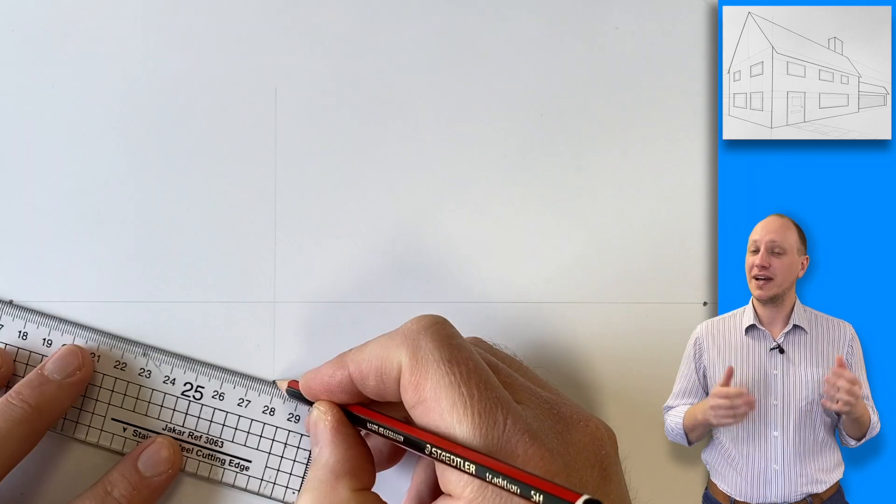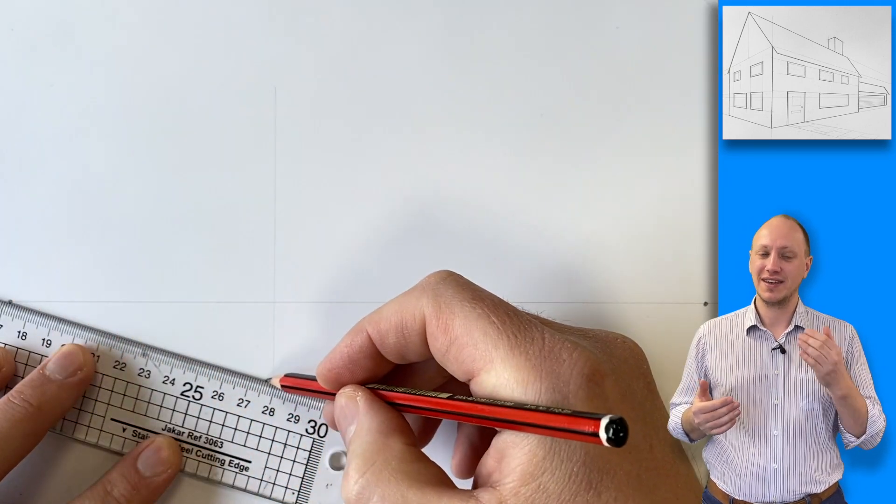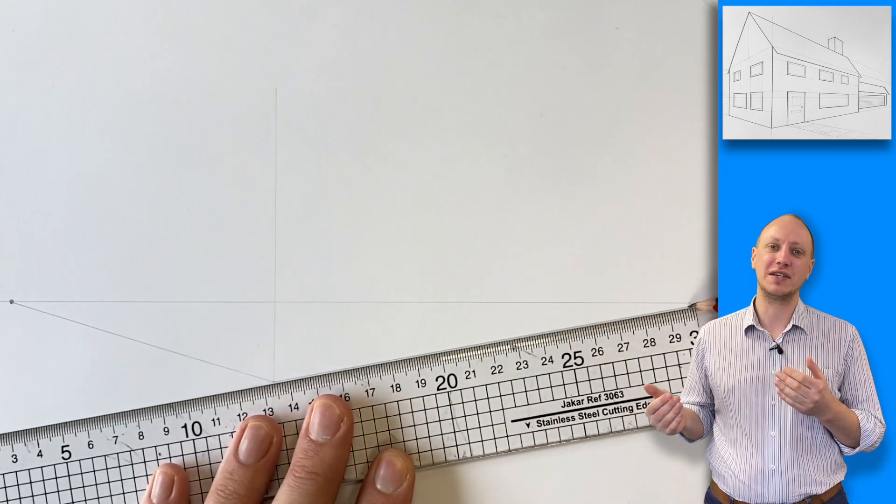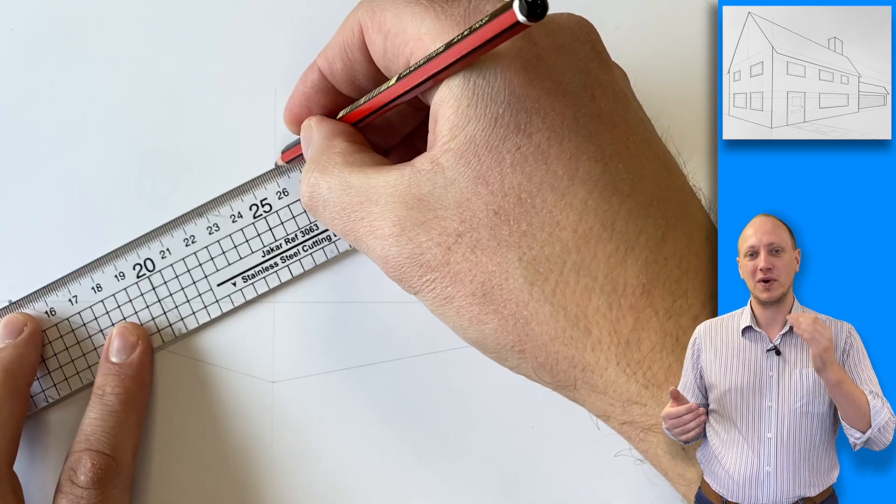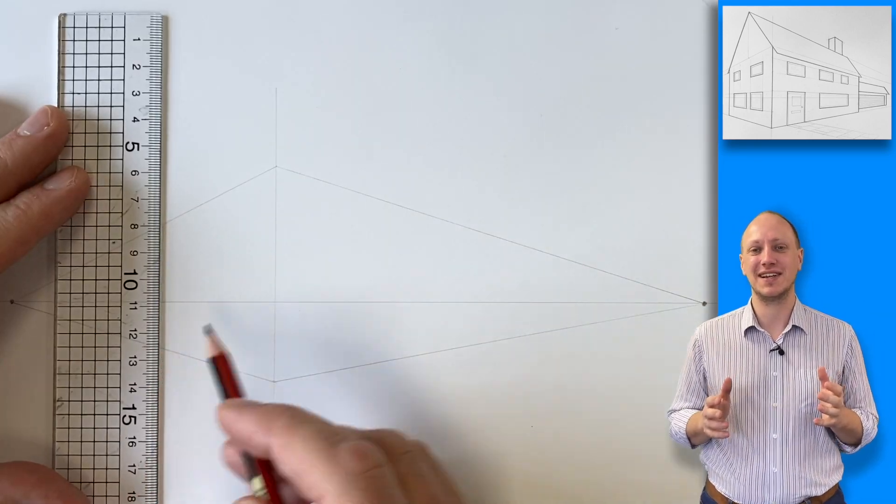Now drop in a vertical line and this will be the middle of your drawing. Connect that line to those vanishing points that you drew before. One line from each dot to the top and bottom of your center line.